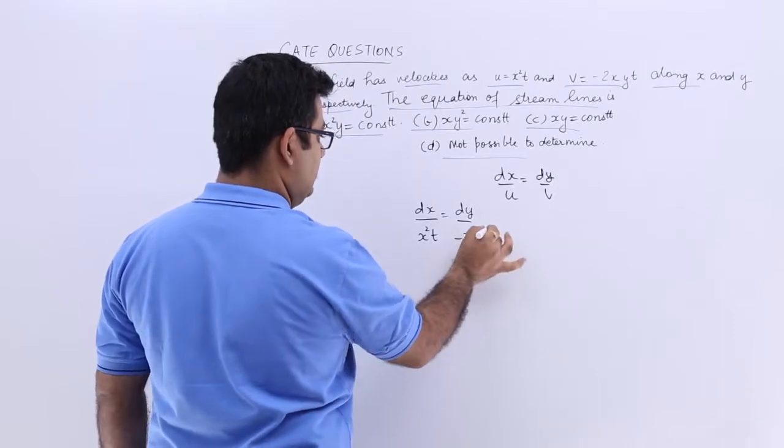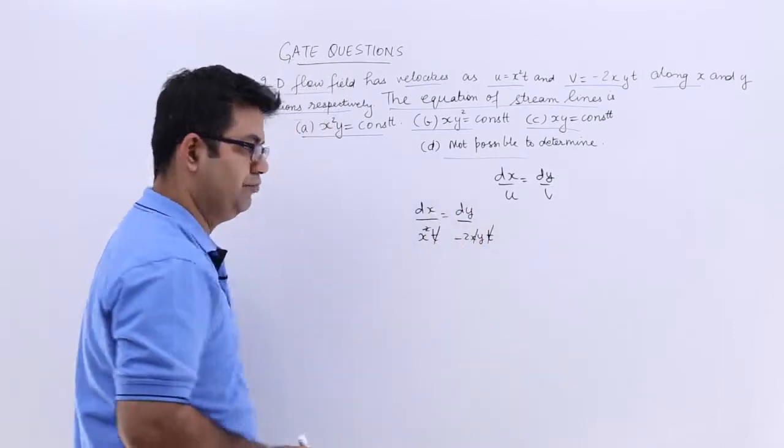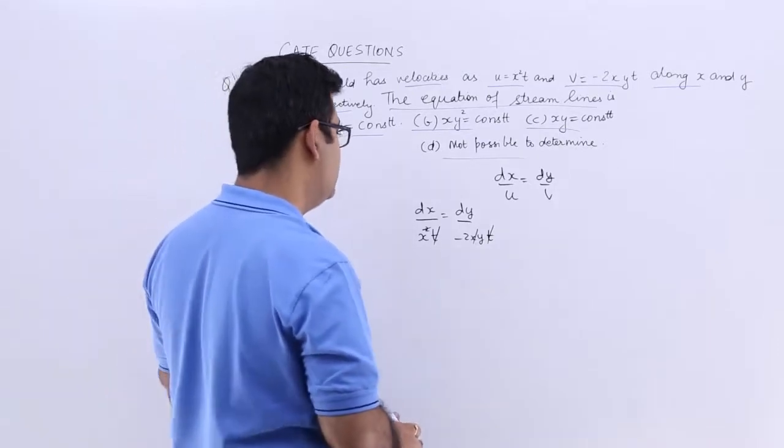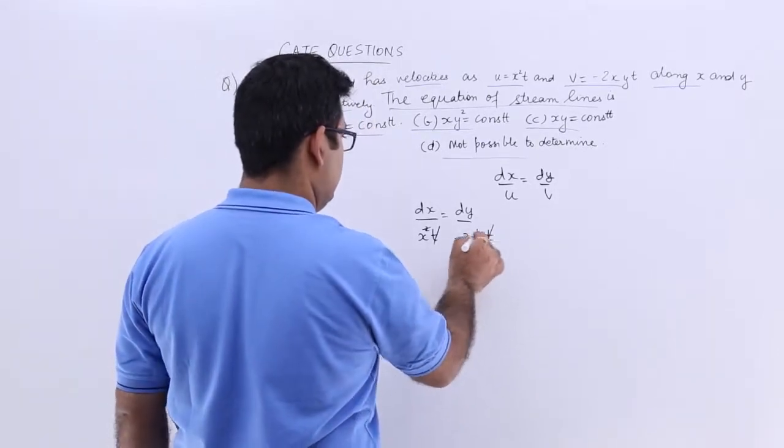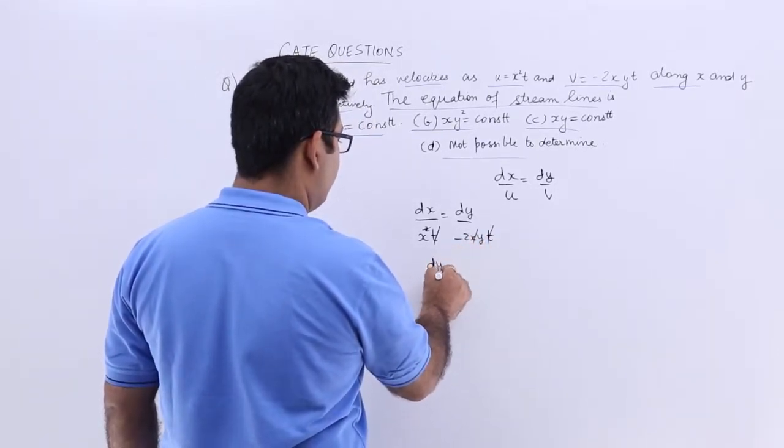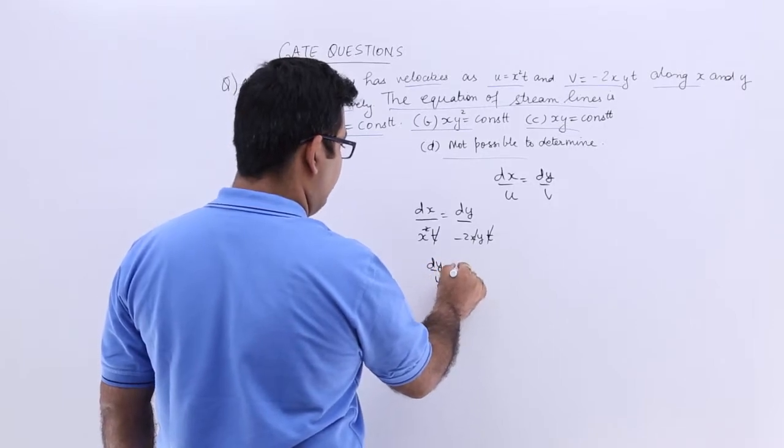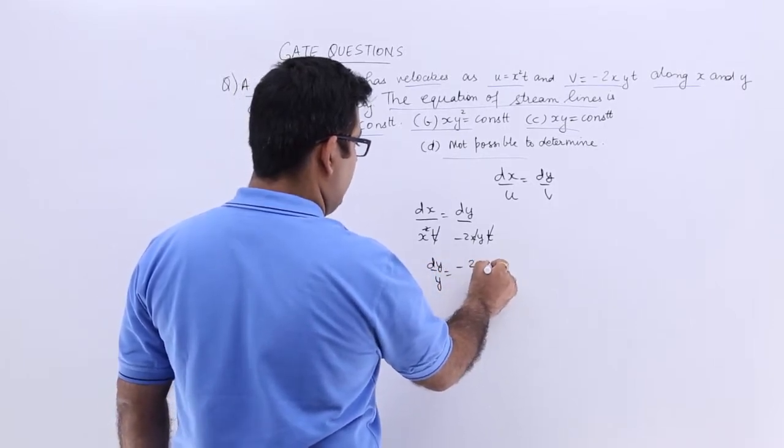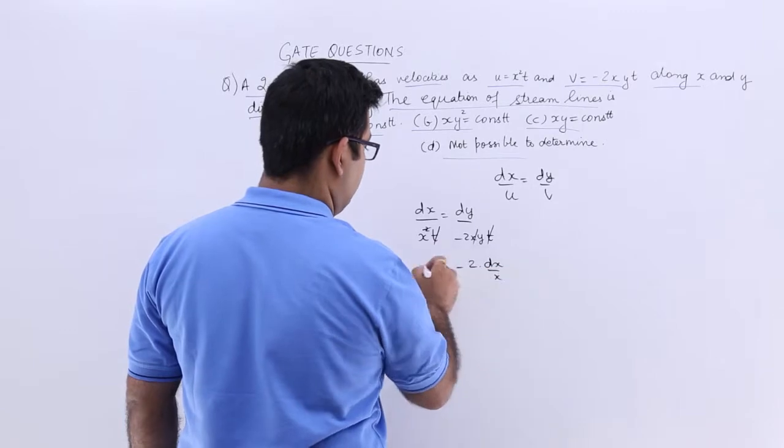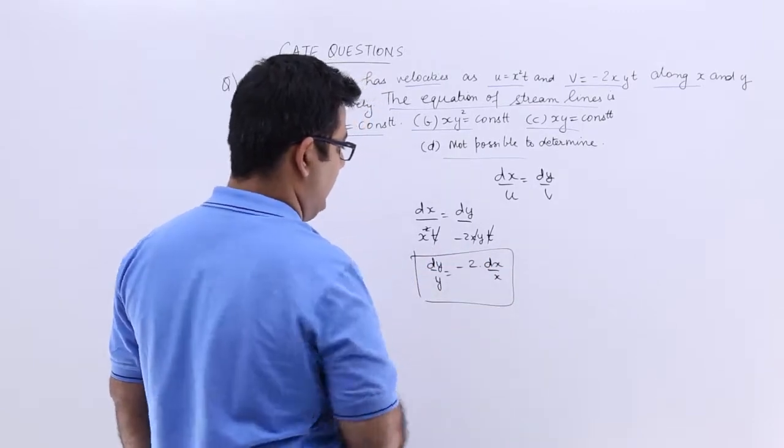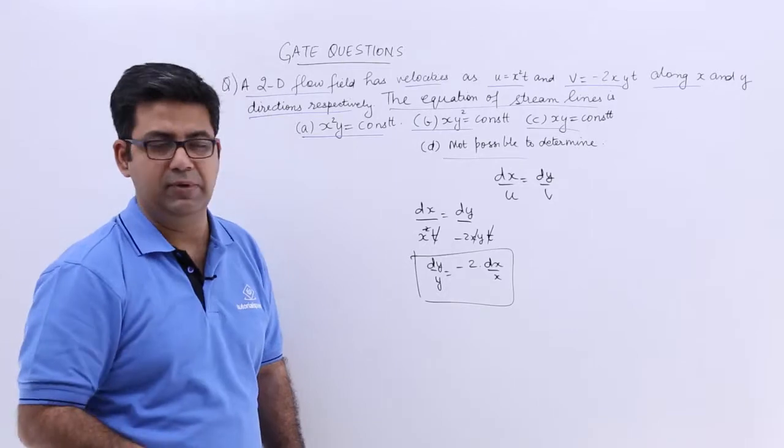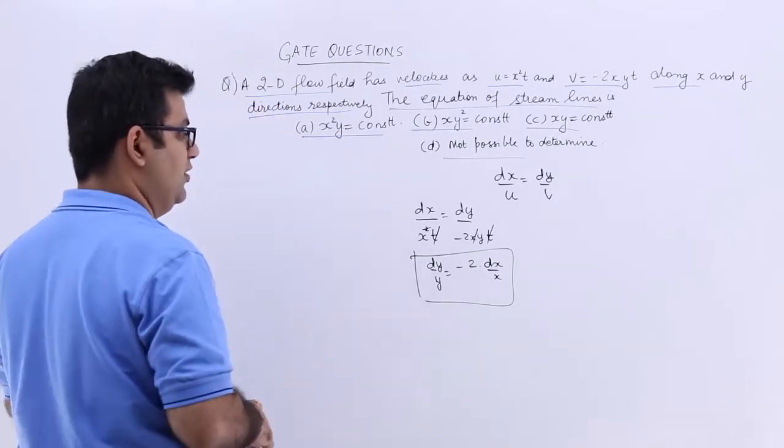So I can strike off t from here, x from here. So we will have dy upon y is equal to minus 2 into dx upon x. So that is what we do and that is what we call the separation of the variables to solve this differential equation.